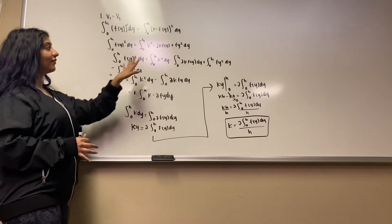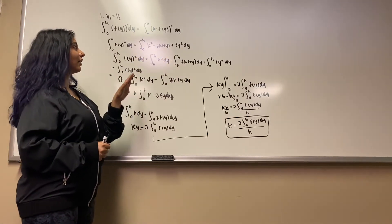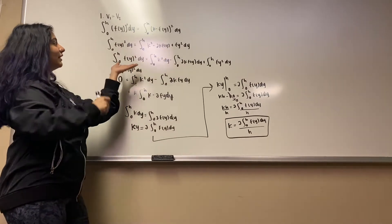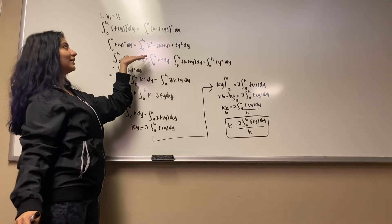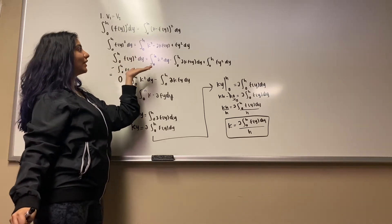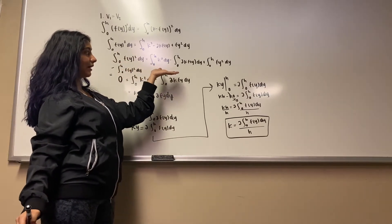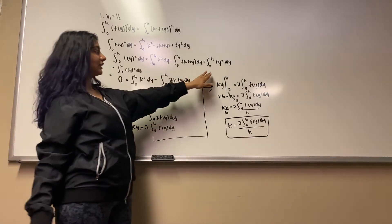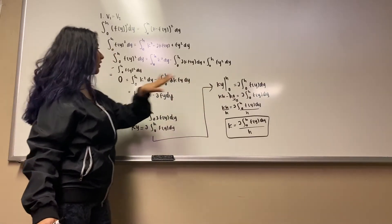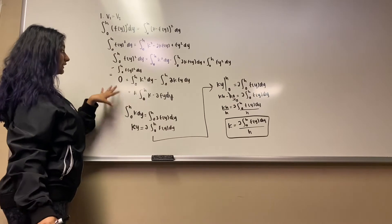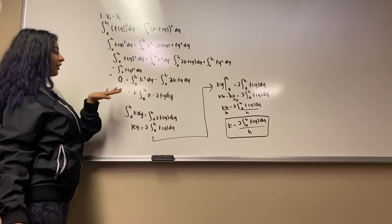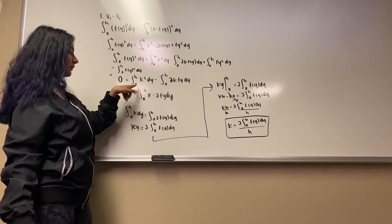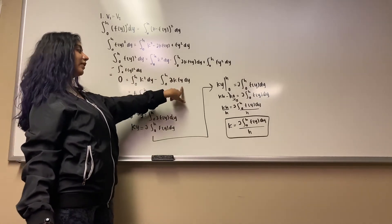We foiled out the second equation and got the integral of f(y) squared dy equal to the integral of k squared minus 2k·f(y) plus f(y) squared dy. Then we subtracted the f(y) squared dy over to get 0 on one side, and were left with the integrals from 0 to H of k squared dy minus 2k·f(y) dy.